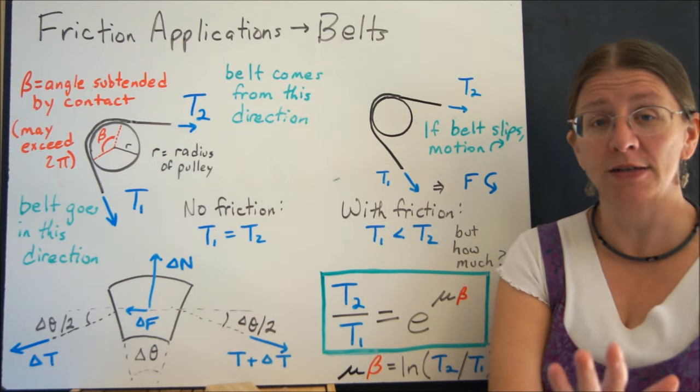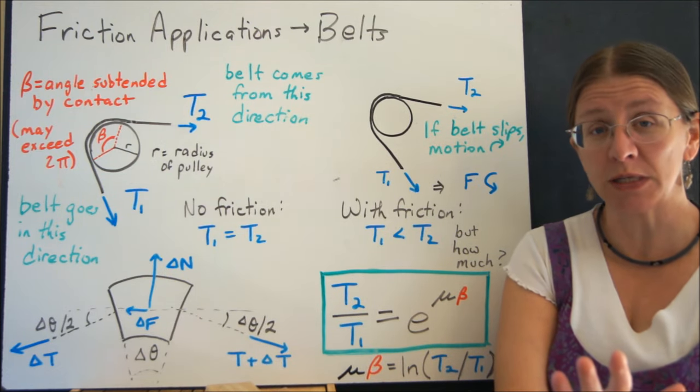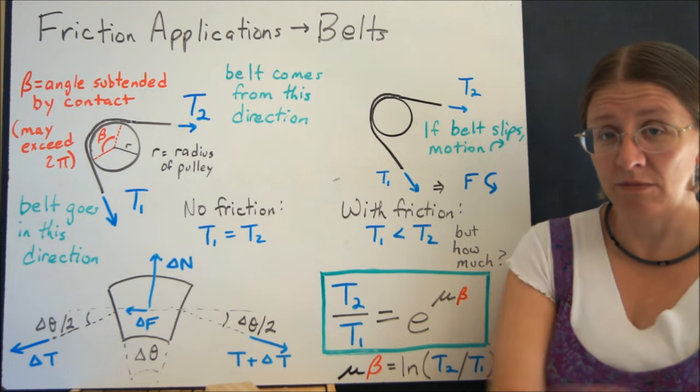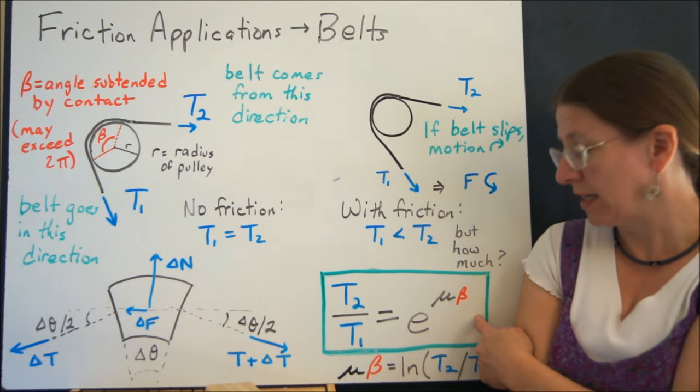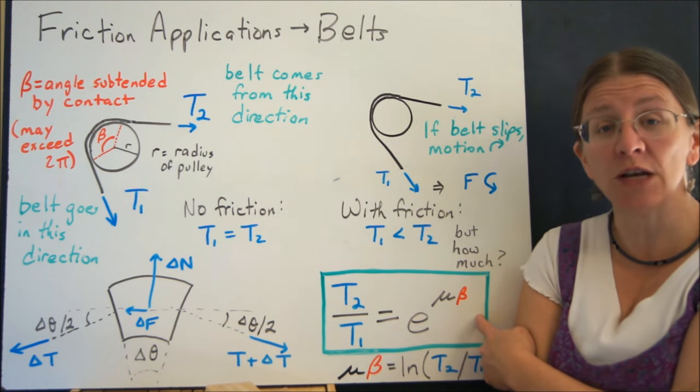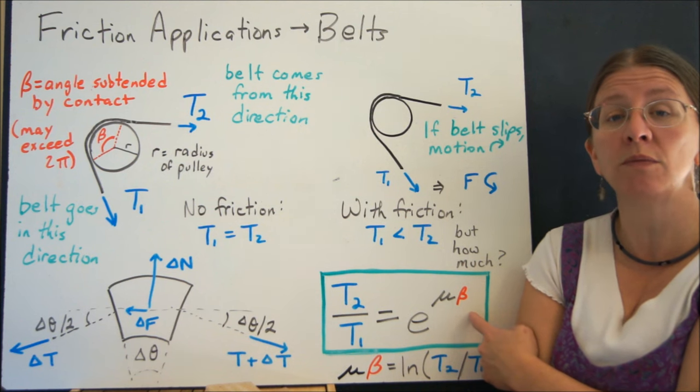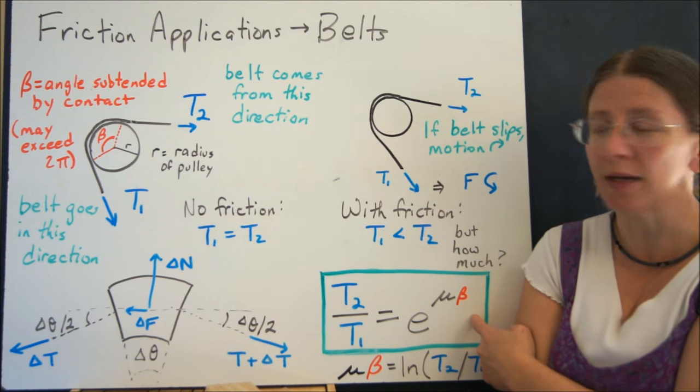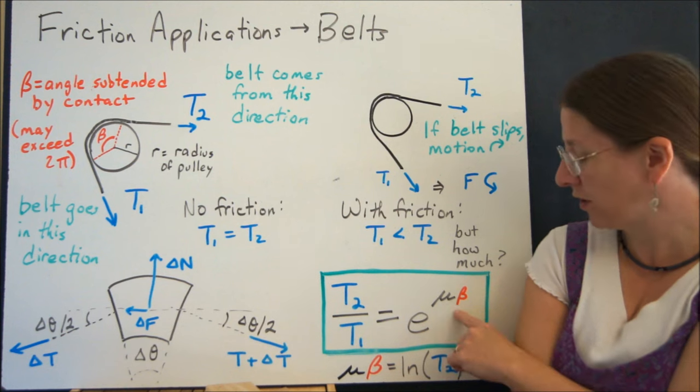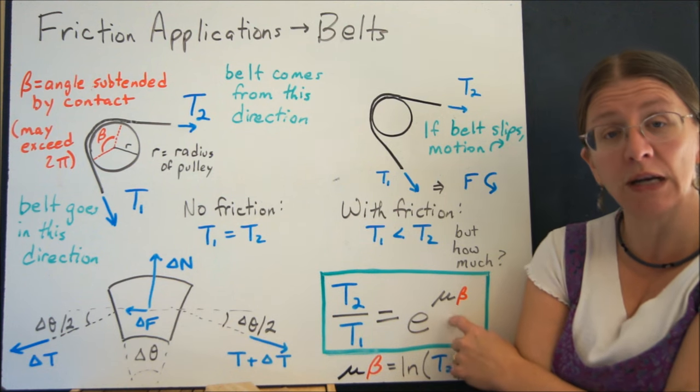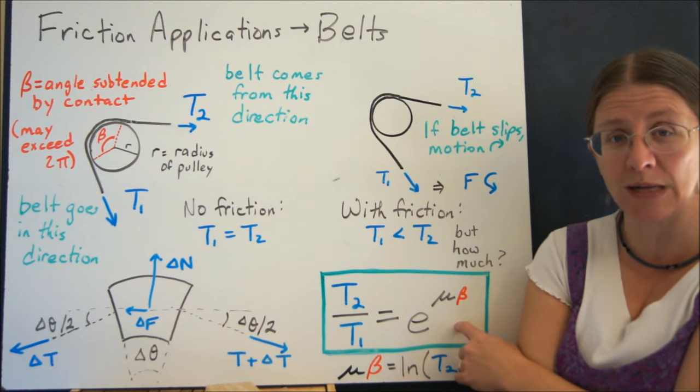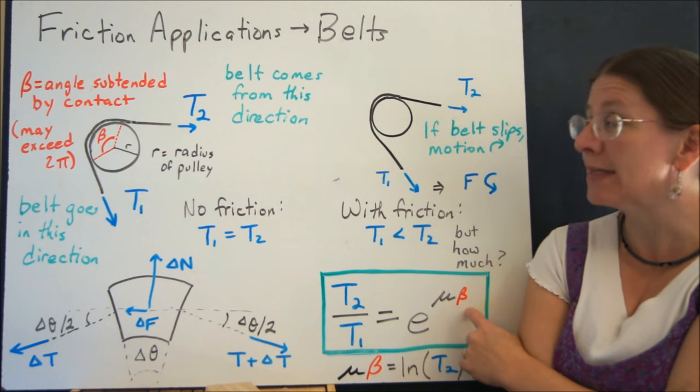When you do that integral, and it is available for you on our learning management site, all of that calculus, you get this nice little formula. The ratio of the two tensions is e to the μ times beta, where μ is the coefficient of static friction or kinetic friction, depending on whether it's actually slipping or about to slip, and beta is that angle.